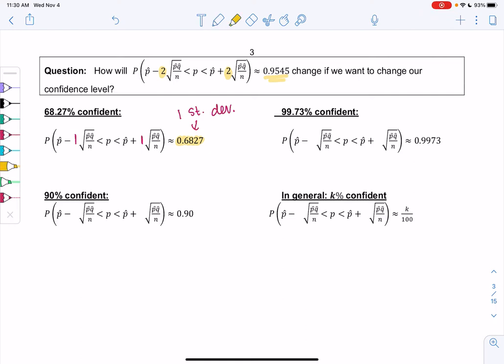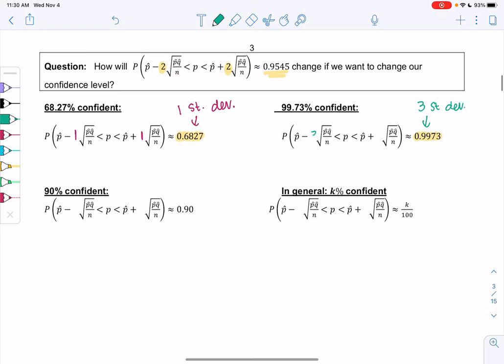This will help us understand the formula better. How about 99.73% confident? We learned that that's three standard deviations. So instead of multiplying by two, we multiply by plus or minus three. So hopefully this is helping us see how the formula will change.